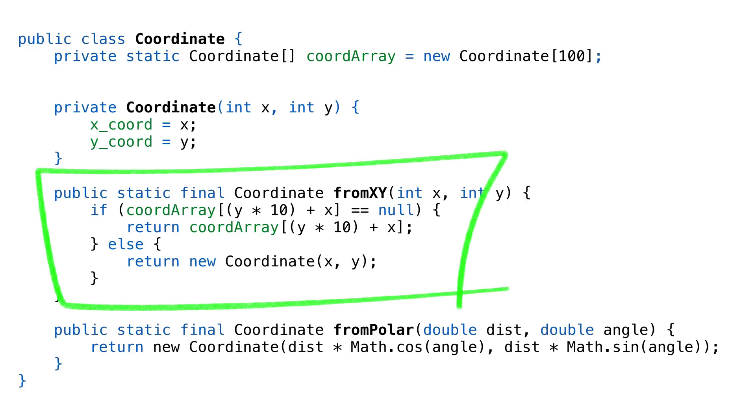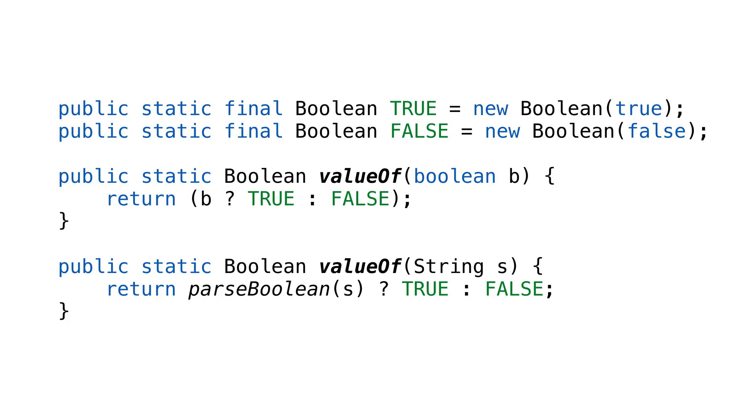We could keep a pool of the coordinate instances, and then when you call the static factory, we'll just return the one you already created. Java does this with boolean values. We might use a boolean class in hundreds of places in an application, but there's only two instances. When you call value of true, you get the instances already created.